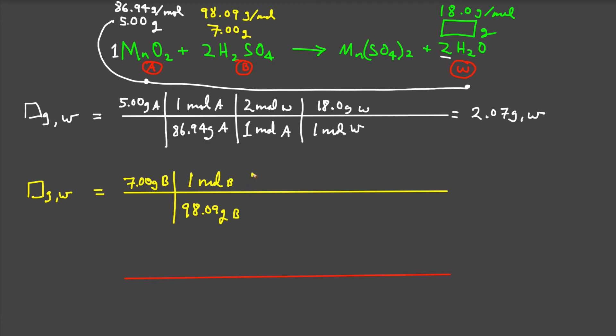And we know for every 2 moles of acid, we will make 2 moles of water. And as before, we know for every 1 mole of water, we will have 18 grams of water. The result being 1.28 grams of water.